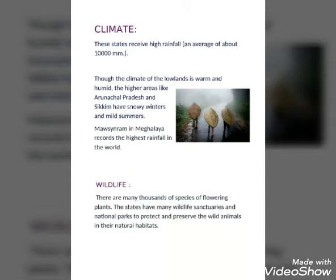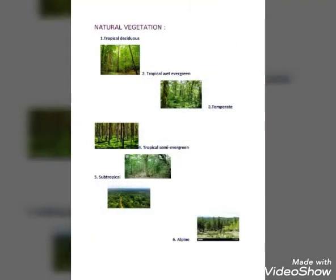Next, let's learn about the wildlife and natural vegetation of the North Eastern states. There are many thousands of species of flowering plants, and the states have many wildlife sanctuaries and national parks to protect wild animals in their natural habitats. There are six types of natural vegetation: tropical deciduous, tropical wet evergreen, temperate, tropical semi-evergreen, subtropical, and alpine.